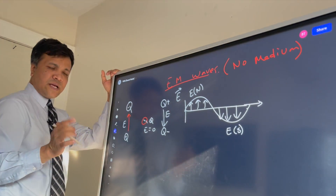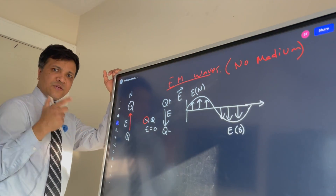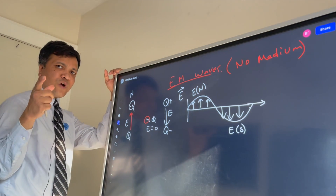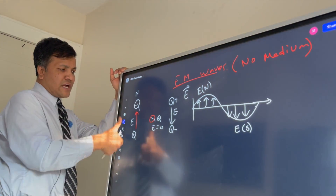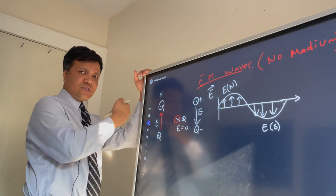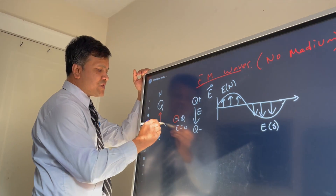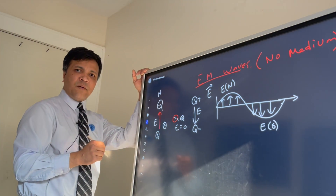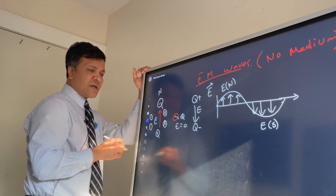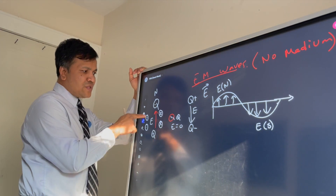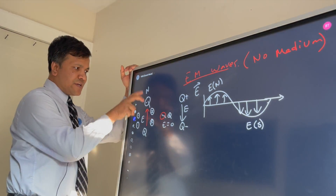In a wire carrying current in the north direction, you can use the right-hand rule to find the direction of the magnetic field. Point your thumb up and curl your fingers around the wire — the magnetic field goes into the page on one side and comes out of the page on the other side.